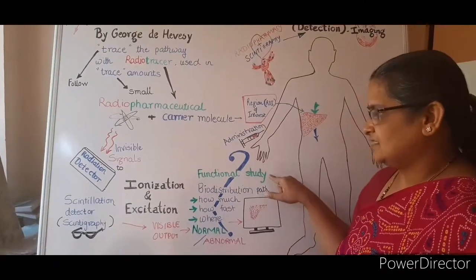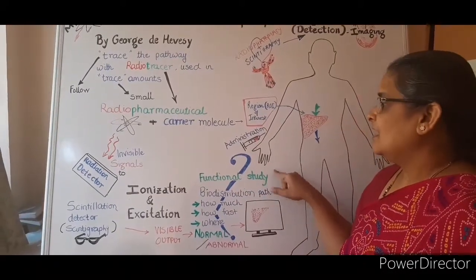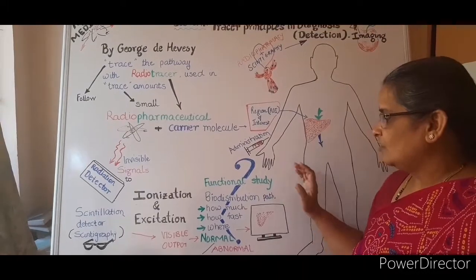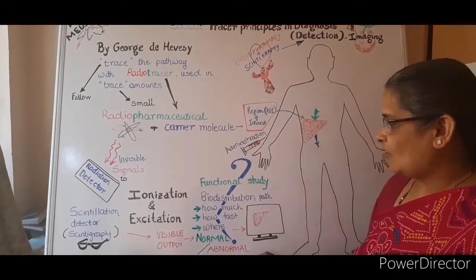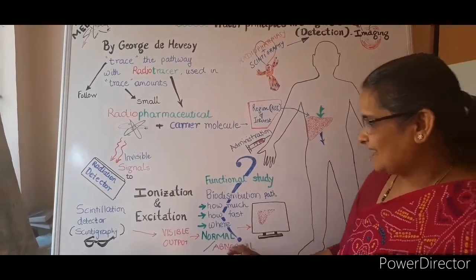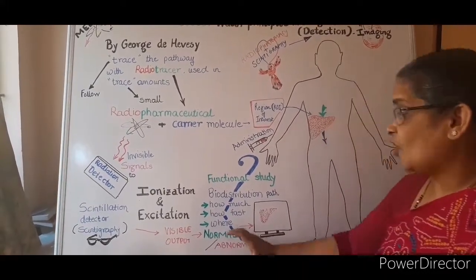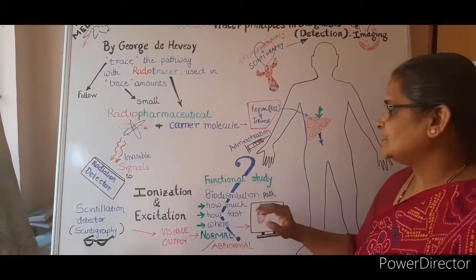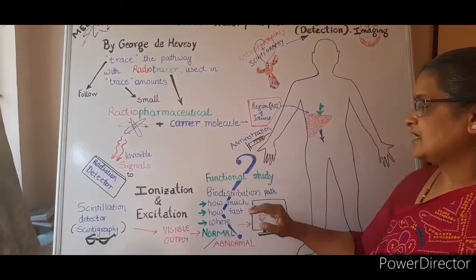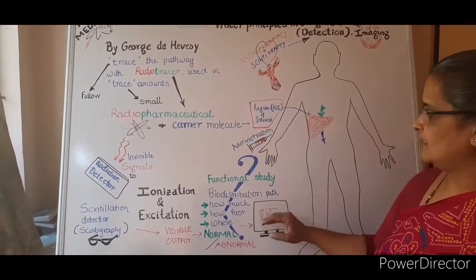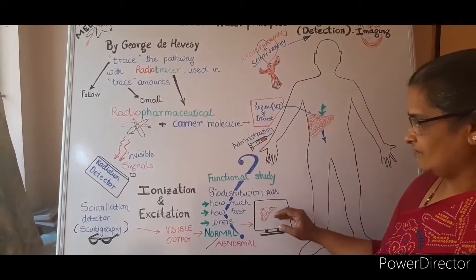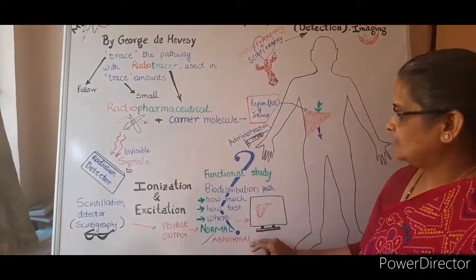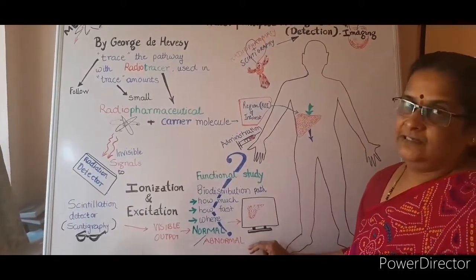Using the acquired functional study, the interpretation can be done by comparing it with the normal biodistribution — as to how much, how fast, and where the radiotracer has traveled — and this is to detect any abnormality.